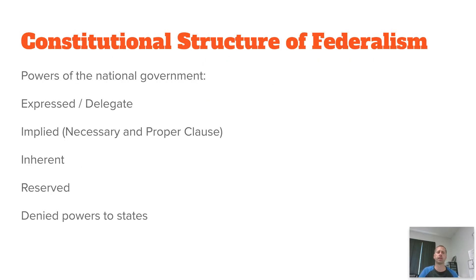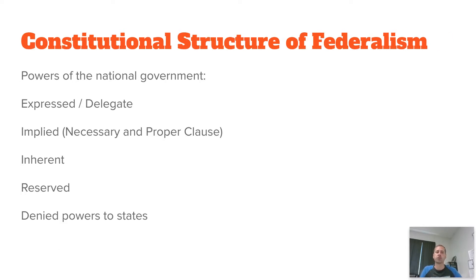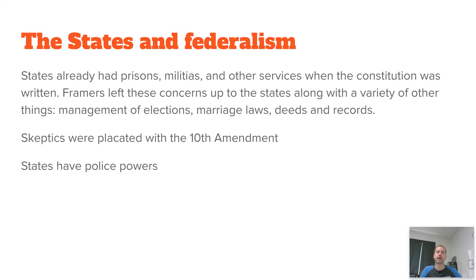If you remember from the previous video, we were looking at the whole idea of federalism, the sharing of powers, where we can find it in the Constitution, the differences with the different types of powers — expressed or delegated, implied, inherent, reserved, denied. We had an assignment on that. We looked at the Tenth Amendment, which said any power not given to the federal government, and not prohibited by the states, are reserved to the states.